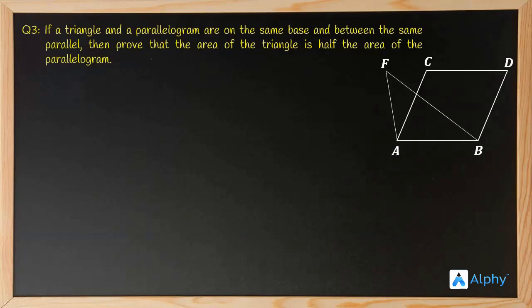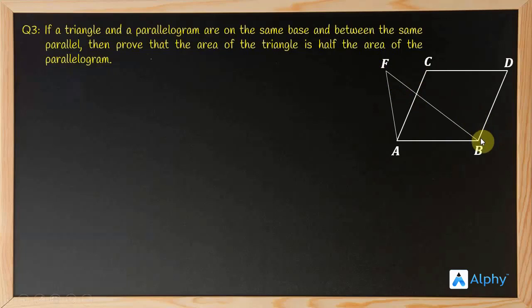But we actually have to prove this mathematically, and that seems a bit tricky — like how to start or where to start. The only thing we know is that if we have two parallelograms between the same base and same parallels we can find their areas. From the introduction of this chapter, we know that if we keep two triangles back to back we get a parallelogram — if you take the same triangle, invert it, and place it here, you get a parallelogram.